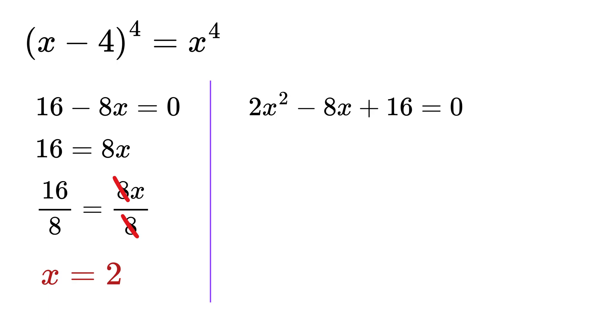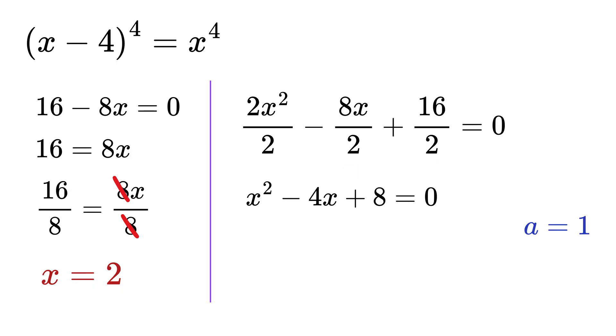Now let us solve this quadratic equation. First of all, divide all these terms by 2. This gives us x square minus 4x plus 8 and that equals 0. So here a is equal to 1, then b is equal to minus 4 and c is equal to plus 8.